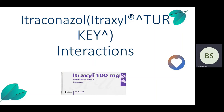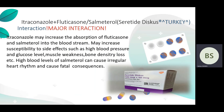The other drug is itraconazole. Itraconazole plus flucytosine and salmeterol interaction: itraconazole may increase the absorption of flucytosine and salmeterol into the bloodstream. It may increase susceptibility to side effects such as high blood pressure, high glucose level, muscle weakness, and bone density loss. High blood levels of salmeterol can cause irregular heart rhythm and fatal consequences.